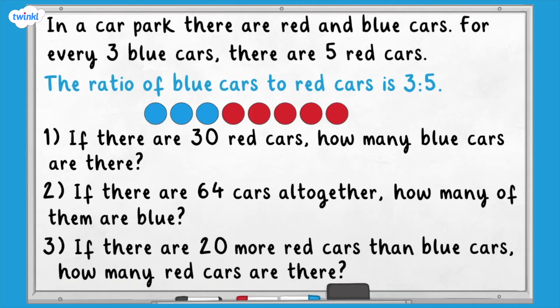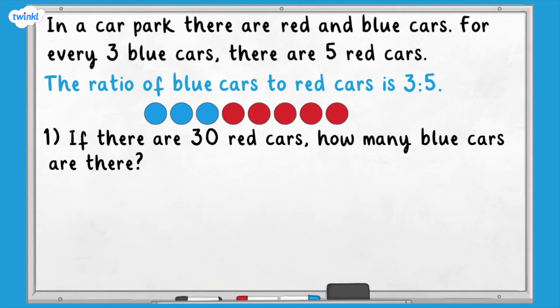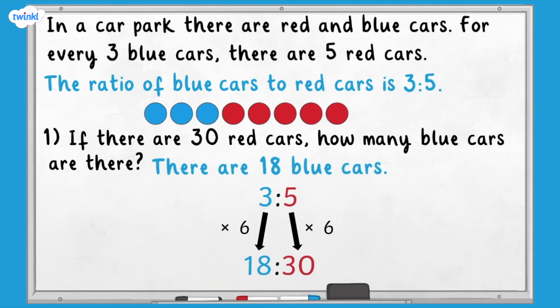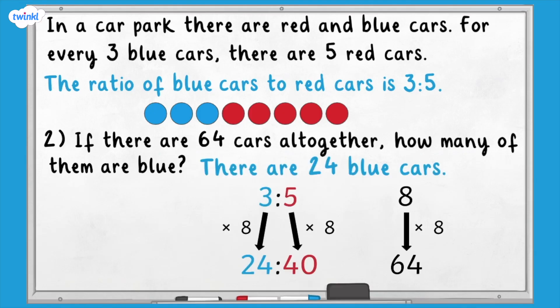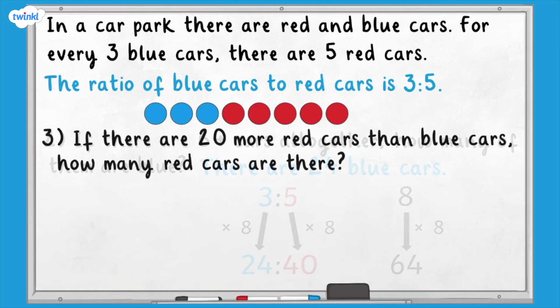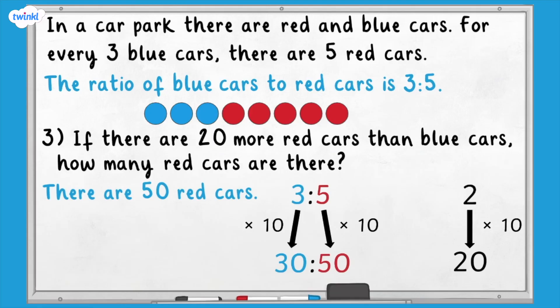Here are the answers. Question one: if there are 30 red cars, there are 18 blue cars. Question two: if there are 64 cars altogether, 24 of them are blue. Question three: if there are 20 more red cars than blue cars, there are 50 red cars. Great work! I hope this video helps you understand how to solve ratio problems. If you're looking for more maths help, we've got lots more of these videos on the Twinkl website, so go and check them out.